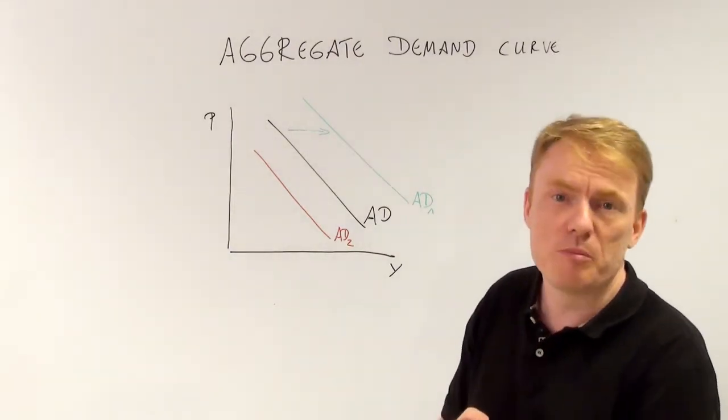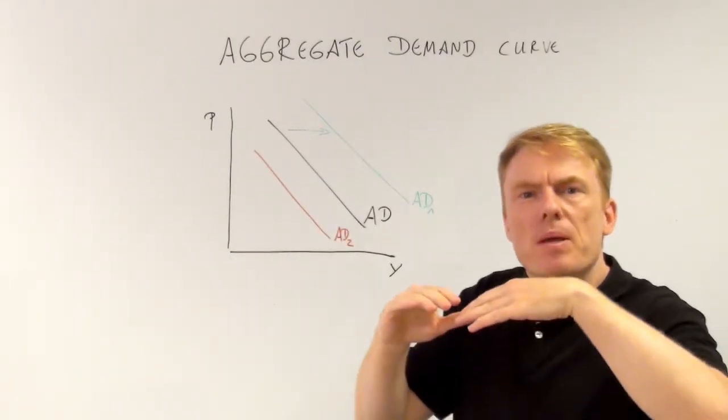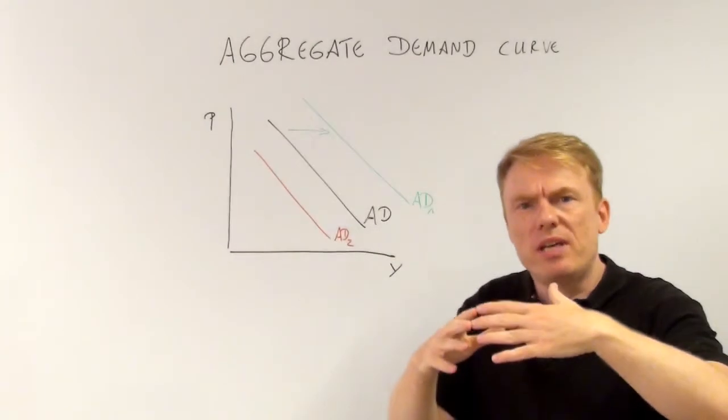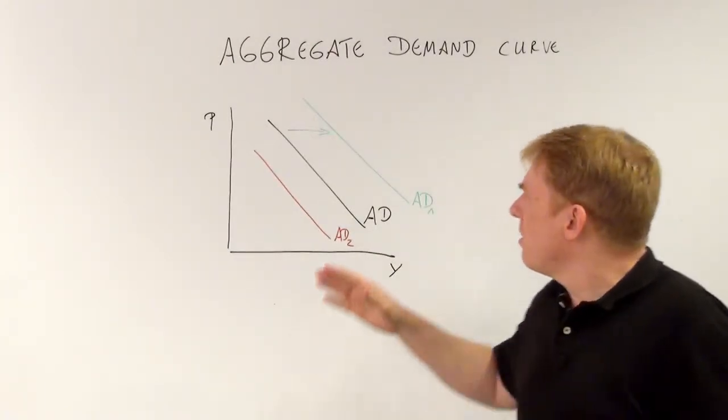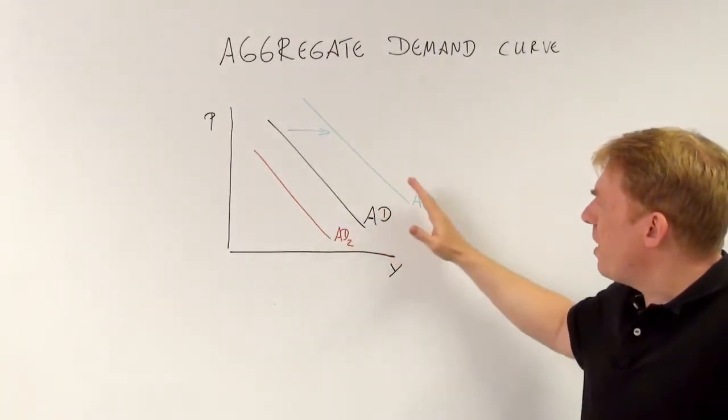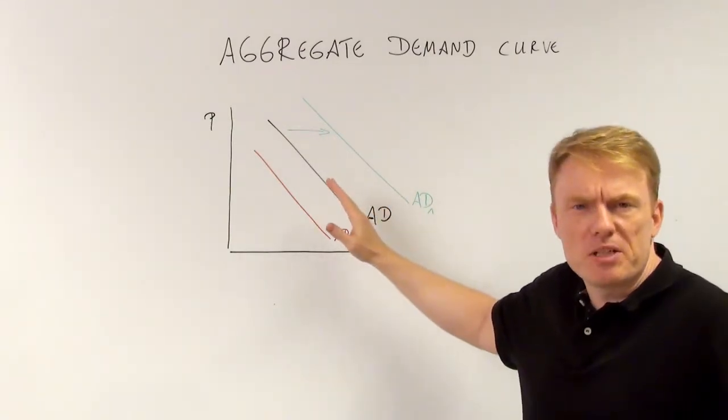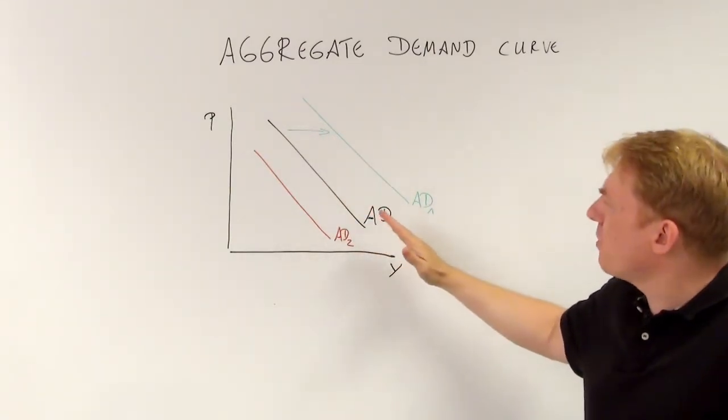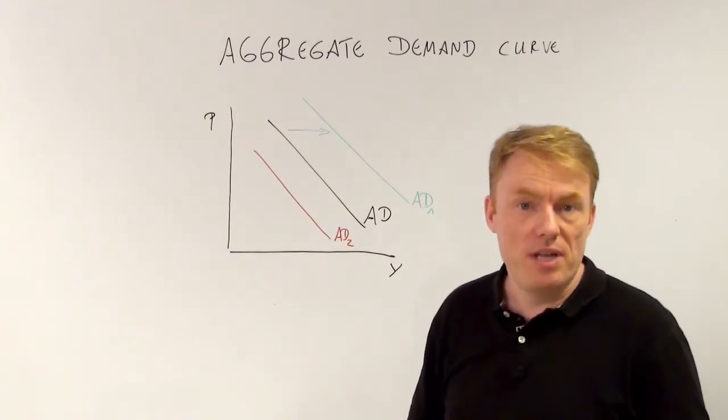Another reason is monetary policy. If central banks increase money supply, the aggregate demand curve goes to the right. If it decreases money supply, then the aggregate demand curve goes to the left. That's the second one.